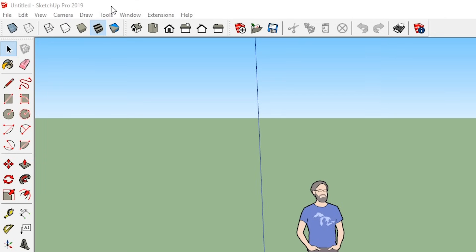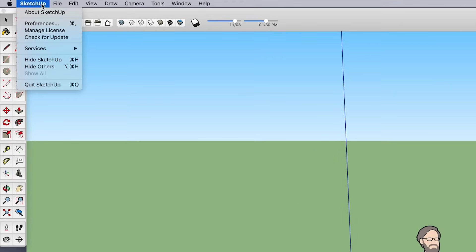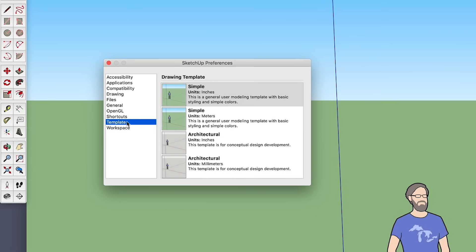For SketchUp Pro, if you're a Windows user, you'll start by going to your top menu and selecting Window. If you're using SketchUp Pro on a Mac, you'll select SketchUp. From there, open the Preferences window and select Template.